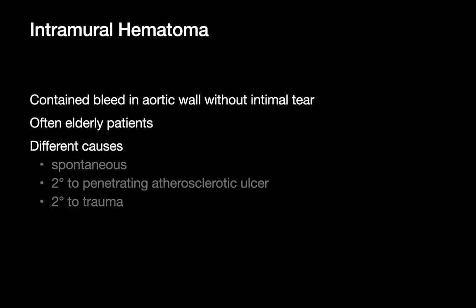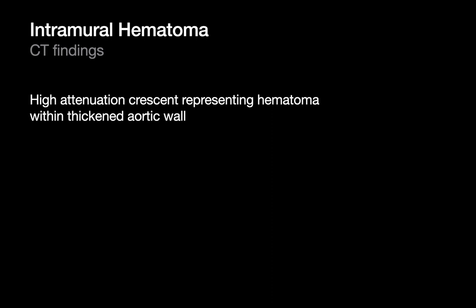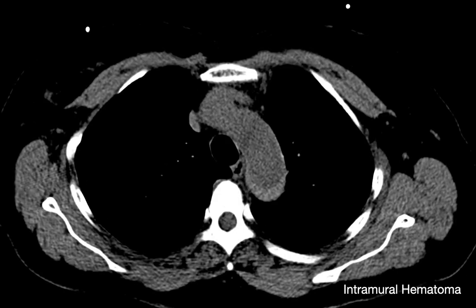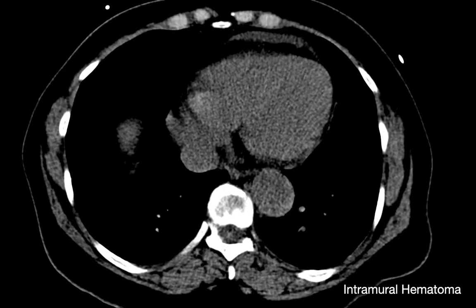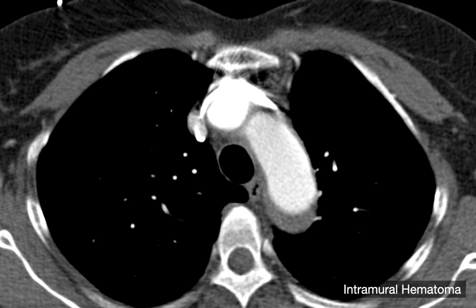Intramural hematomas (IMHs) are a contained bleed within the wall of the aorta, usually within the media. PAUs are one cause; IMHs can also happen in the setting of trauma, and many occur spontaneously. The prognosis varies — about half resolve by themselves, a quarter may progress to a pseudoaneurysm or aneurysm, and another quarter may progress to dissection. IMHs cannot be detected on chest x-ray, but on non-contrast CT they present as subtle hyperattenuation within the wall of the aorta. Ironically, if you give intravenous contrast, they're a bit tougher to recognize.